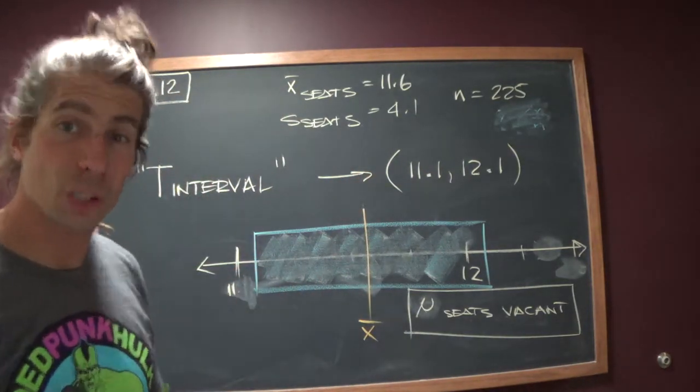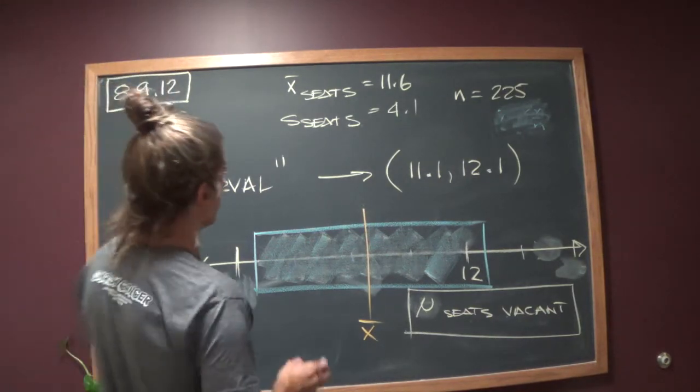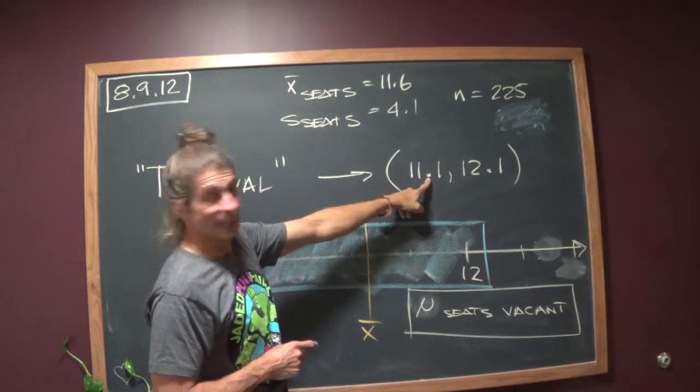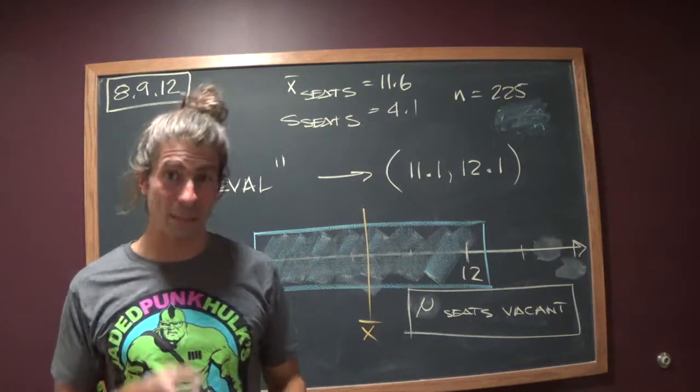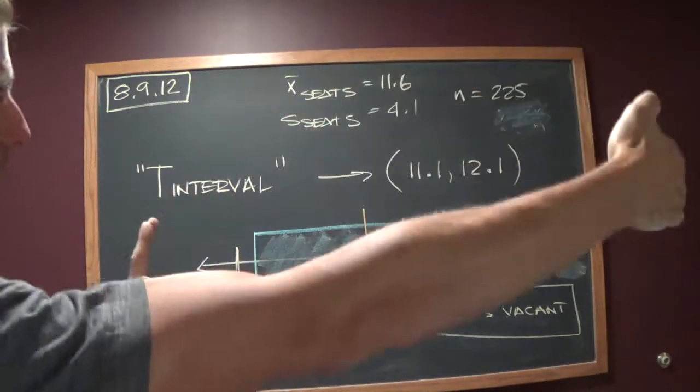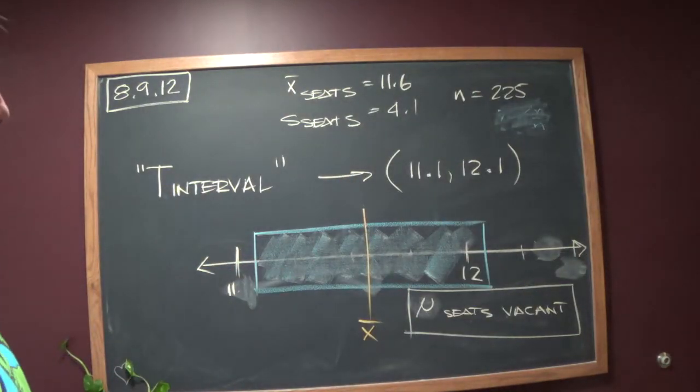The error bound is just the margin of error. What is the plus or minus? Well, if the average is 11.6 and the bottom of this interval is 11.1, that's a half of a seat, 0.5, half of a seat error bound. Half of a seat on the upper side gets you to 12.1. So there's your error bound.